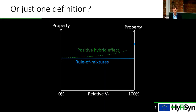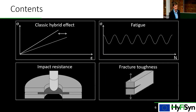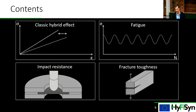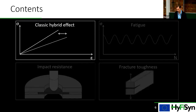I'll now apply these definitions and analyze four different important properties for hybrid composites: first, the classical hybrid effect of initial failure strain enhancement; then fatigue, impact resistance, and fracture toughness. There are plenty of others — tensile strength, flexural strength — but I think these four are the most interesting and most relevant for hybrid composites. Starting with the classical hybrid effect.